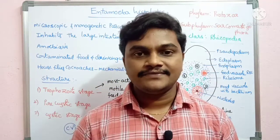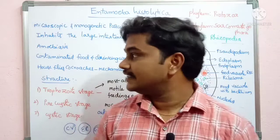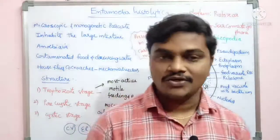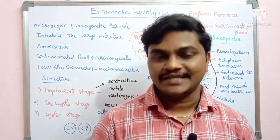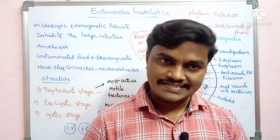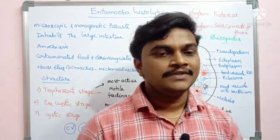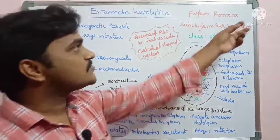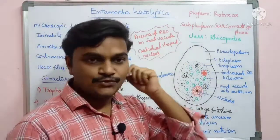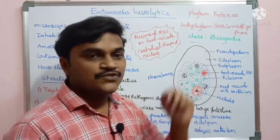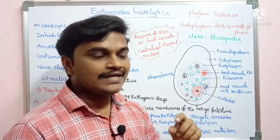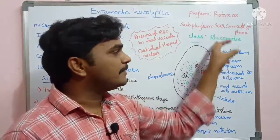The life cycle of Entamoeba histolytica — it is a protozoan parasite that causes amoebic dysentery or amoebiasis. This protozoan parasite belongs to the phylum Protozoa, subphylum Sarcomastigophora, and class Rhizopodea. This is the systematic position of the protozoan parasite Entamoeba histolytica.